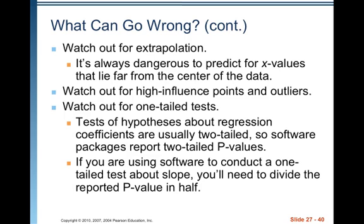Watch out for high influence points and outliers. Watch out for one-tailed tests — tests of hypotheses about regression coefficients are usually two-tailed, so software packages report two-tailed p-values. 99.99% of the time, what we're interested in is the null hypothesis that beta-1 equals 0 versus the alternative that beta-1 does not equal 0. If you are using software to conduct a one-tailed test about a slope, you'll need to divide the reported p-value in half — for example, if your alternative is that there's a positive linear relationship.